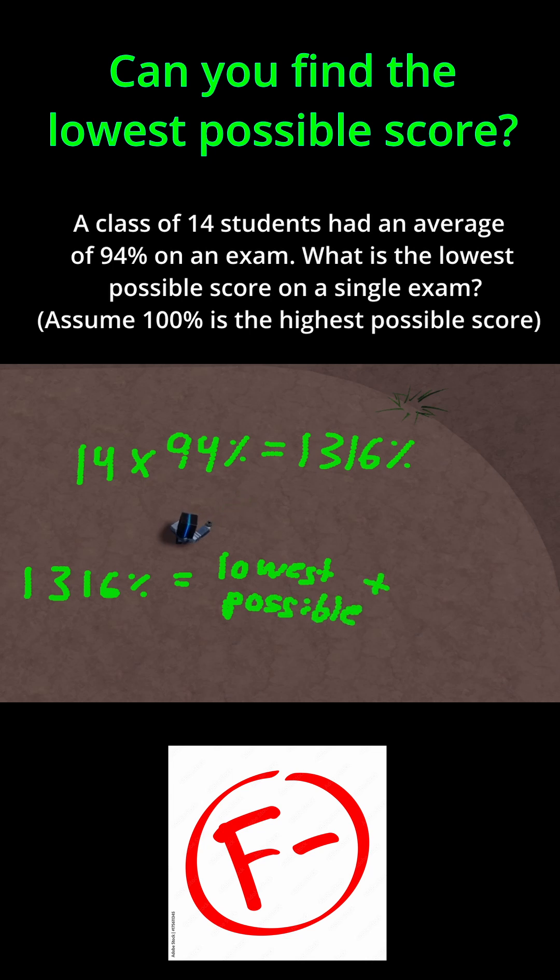Next, let's assume that the other 13 students got 100% on their exams. For one student to have the lowest possible score, everybody else should have the highest score so that they can raise the average up to 94%. So 13 times 100%. This will allow us to calculate what the lowest possible score is.